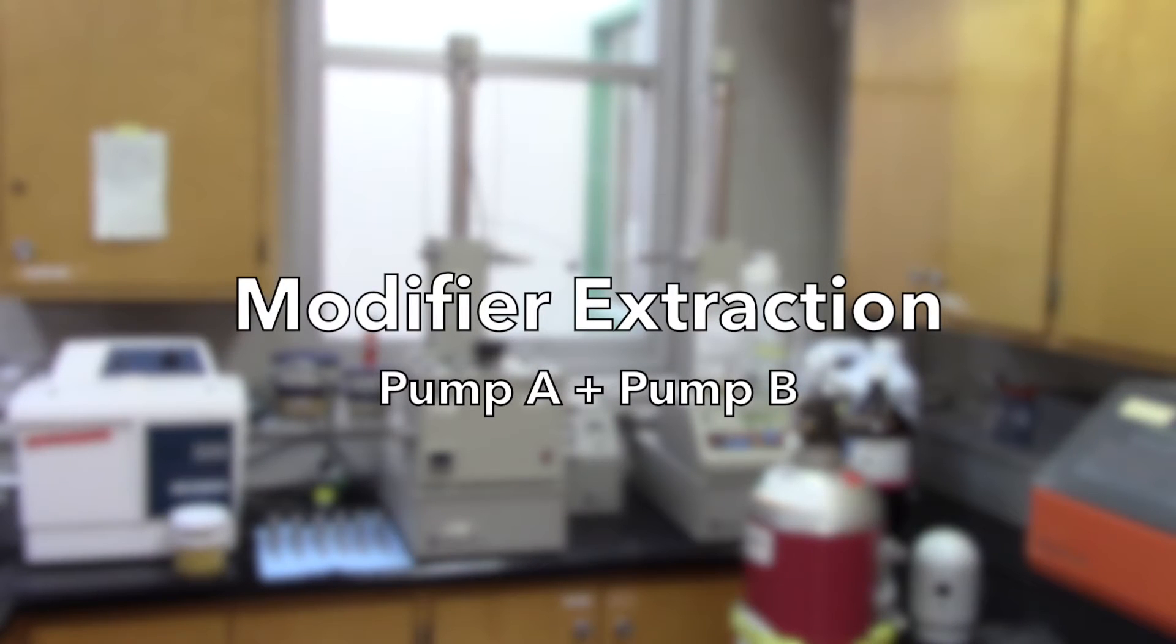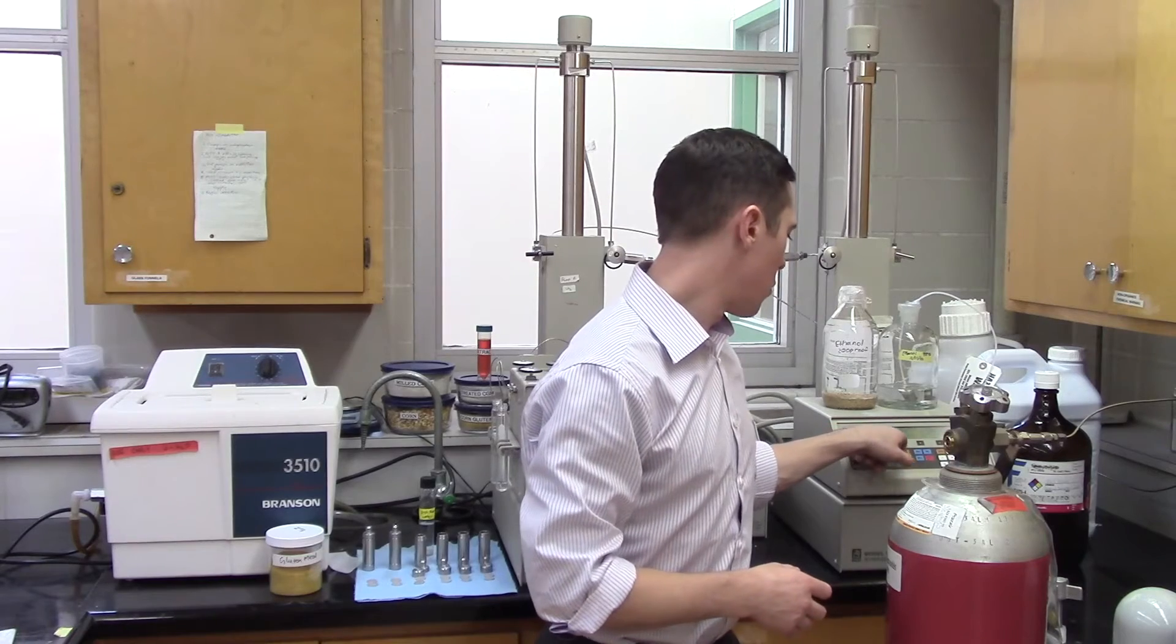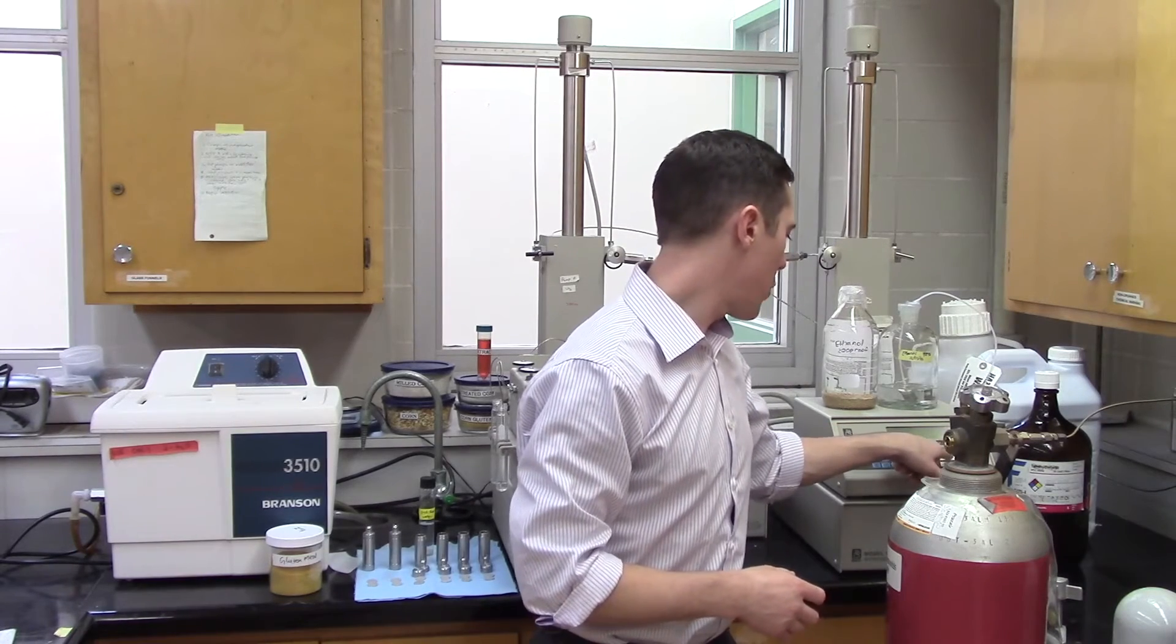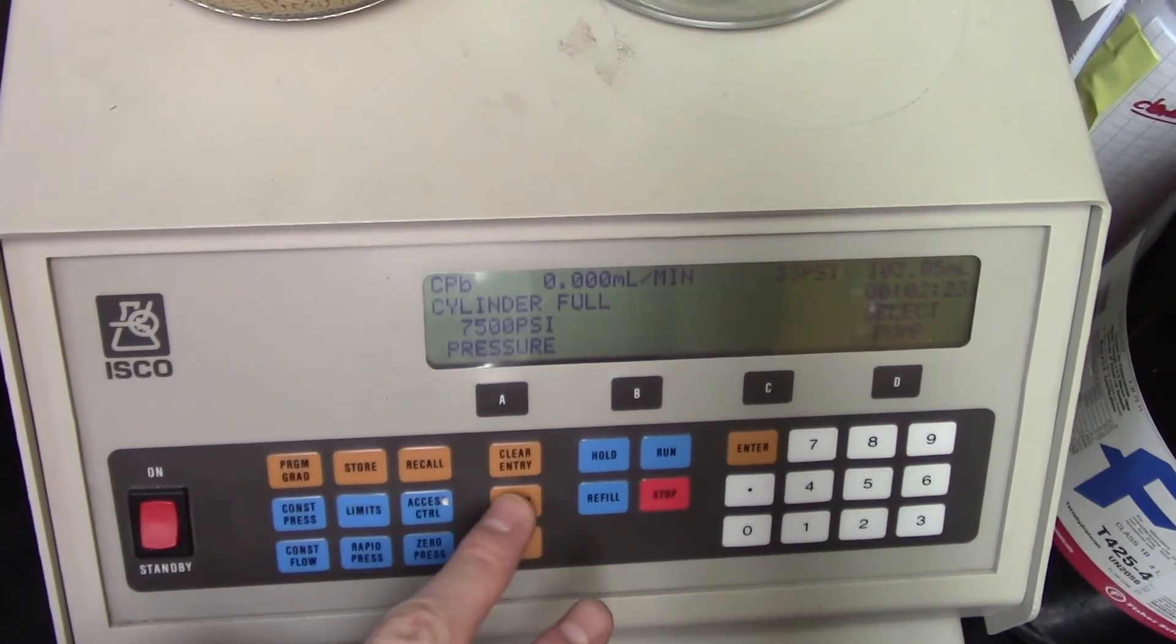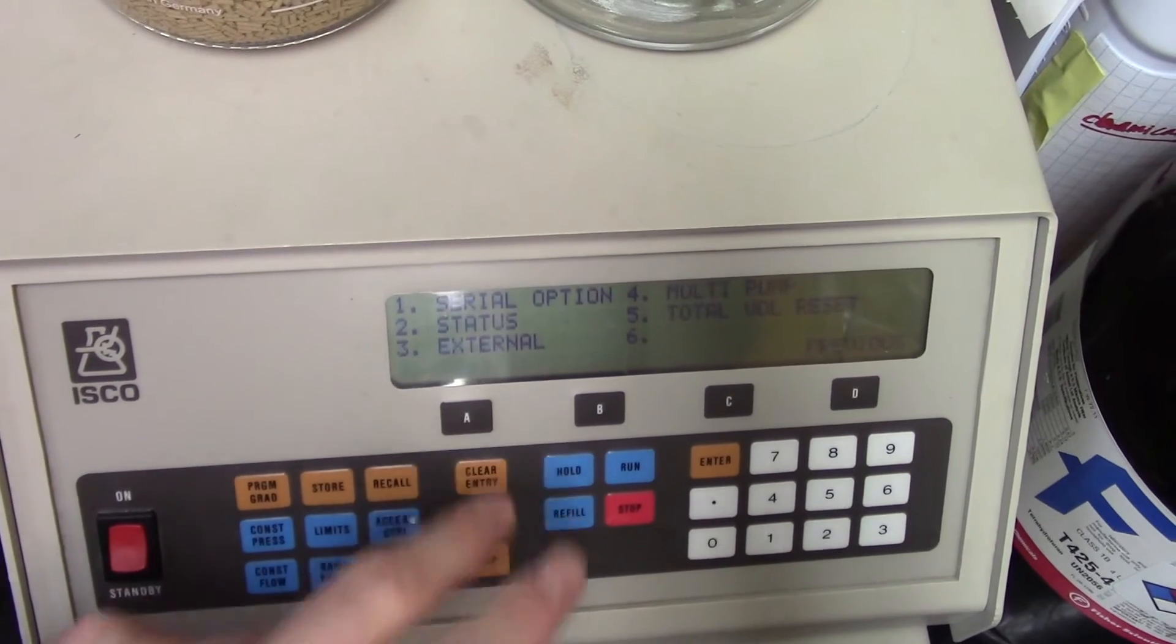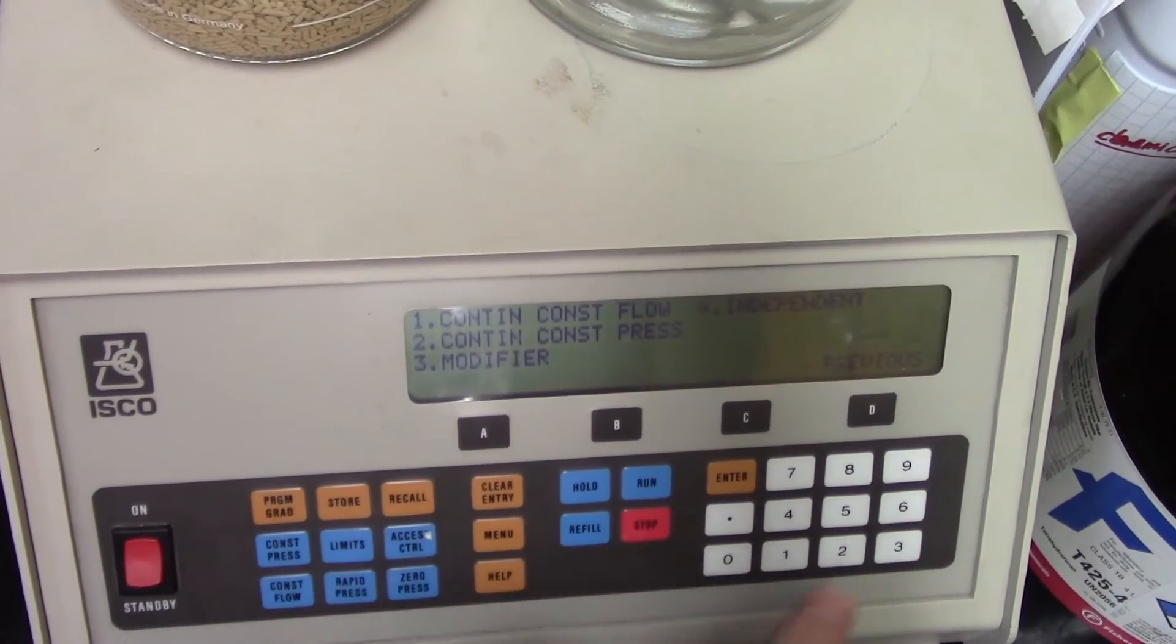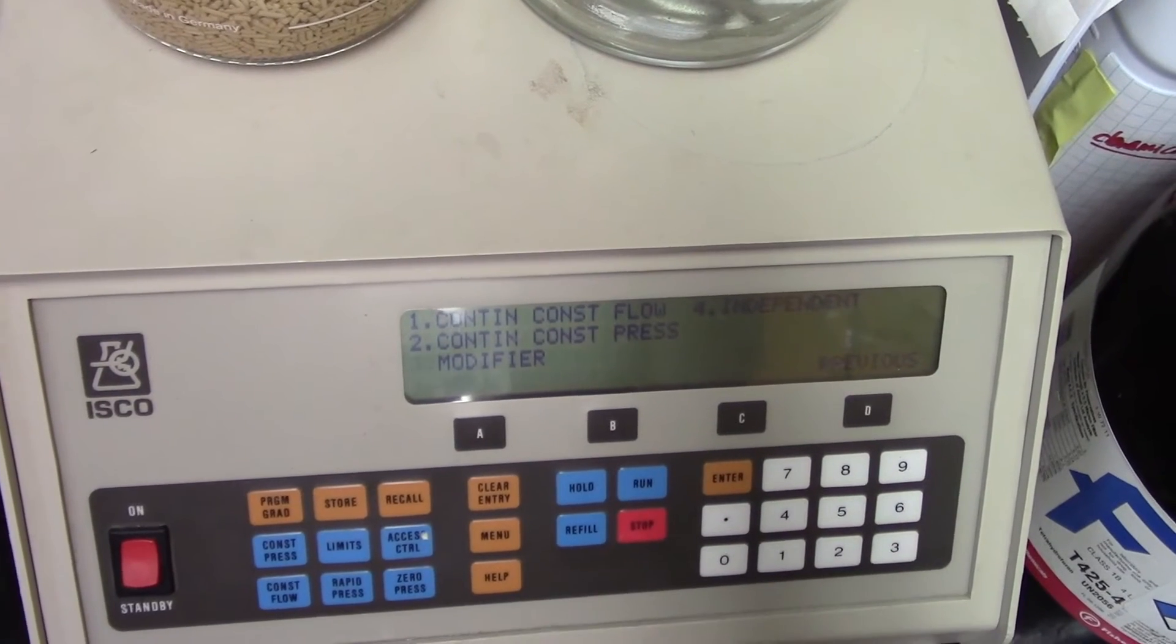Now I'll show the extraction in modifier mode. The process is mostly the same with only a few simple alterations. First, you need to change the controls to modifier mode. On the control panel, click menu, A for more options, 4 for multi-pump mode, and this time click 3 for modifier mode. Then press enter and D three times.